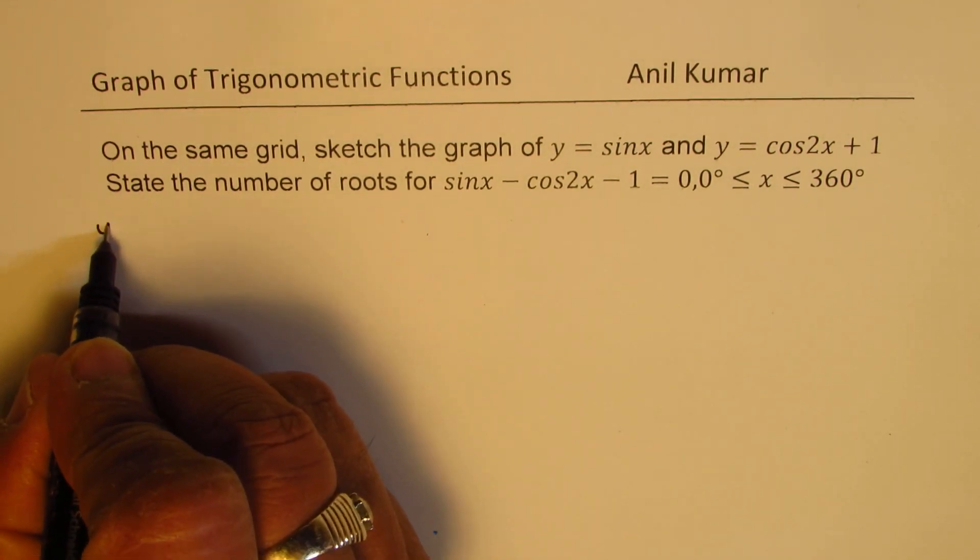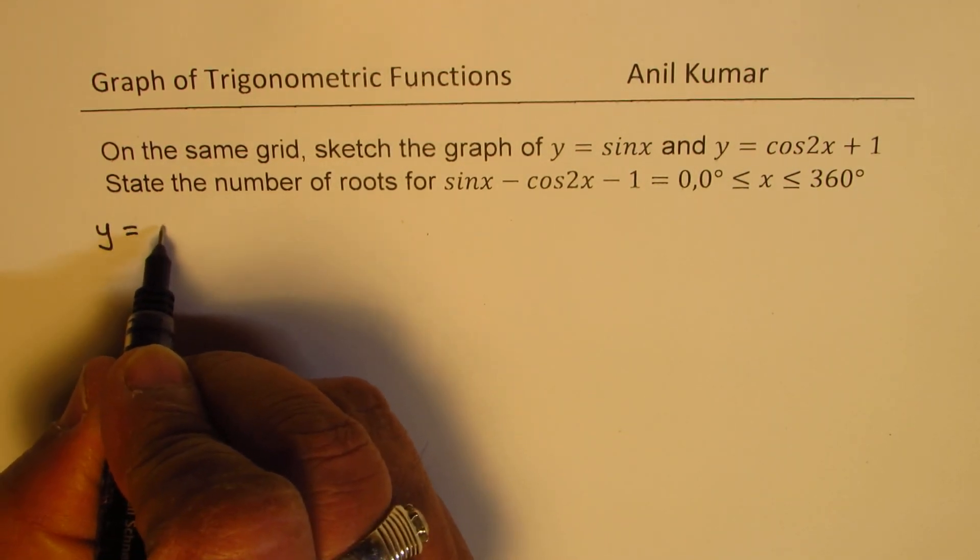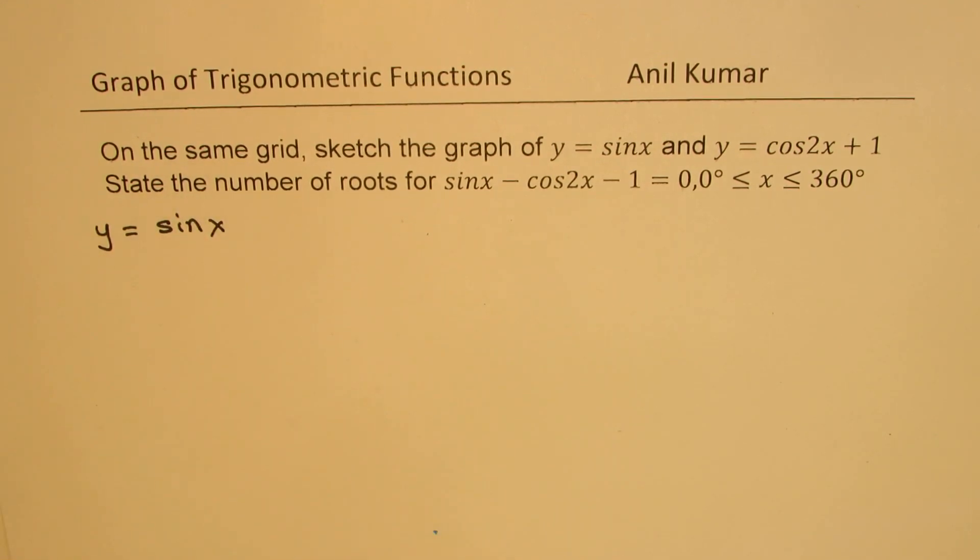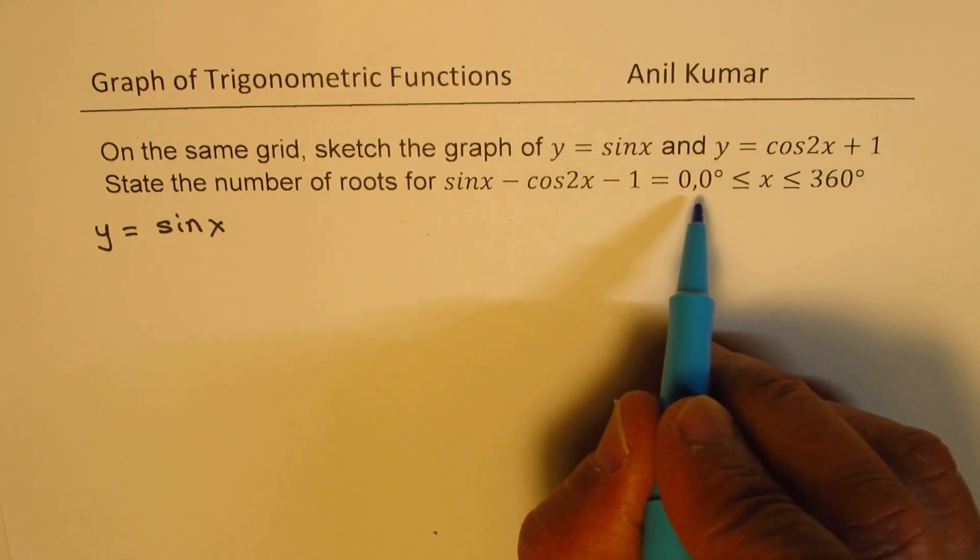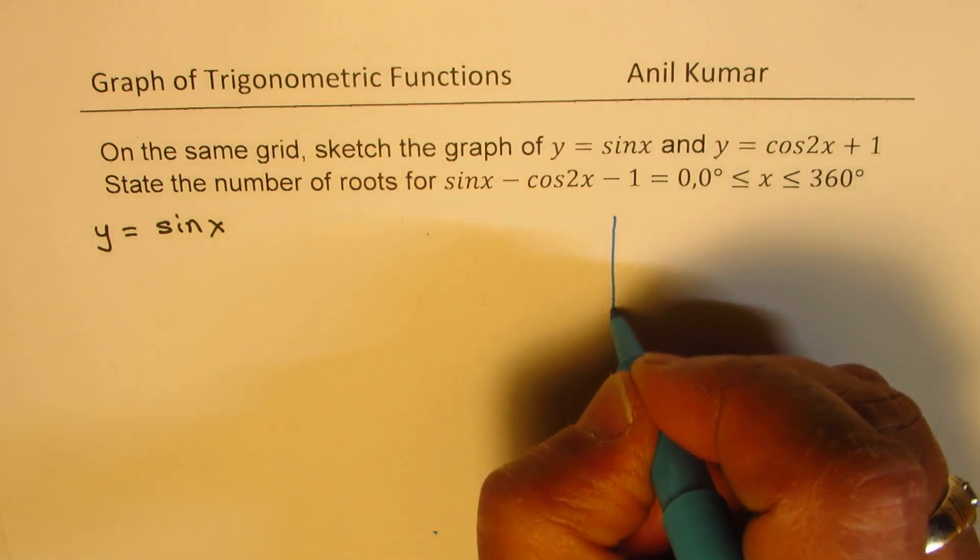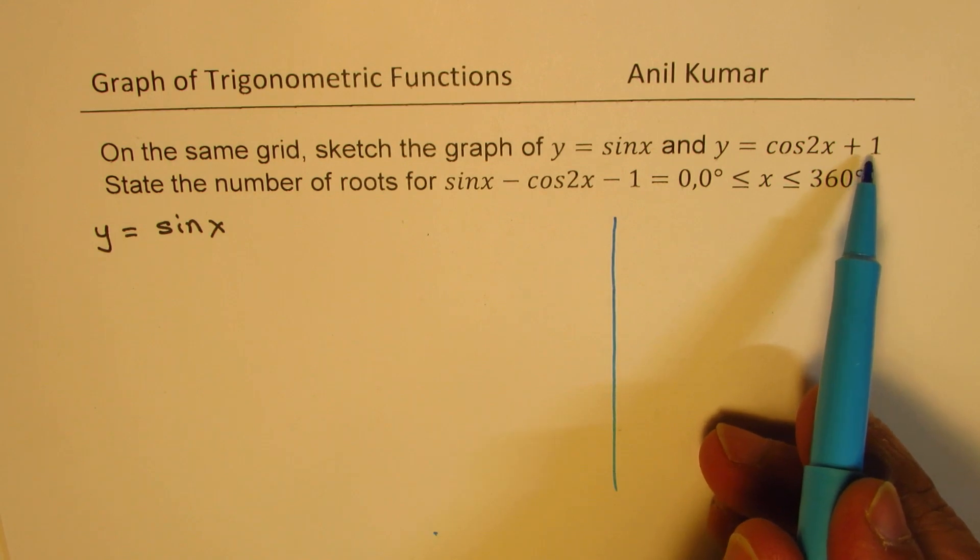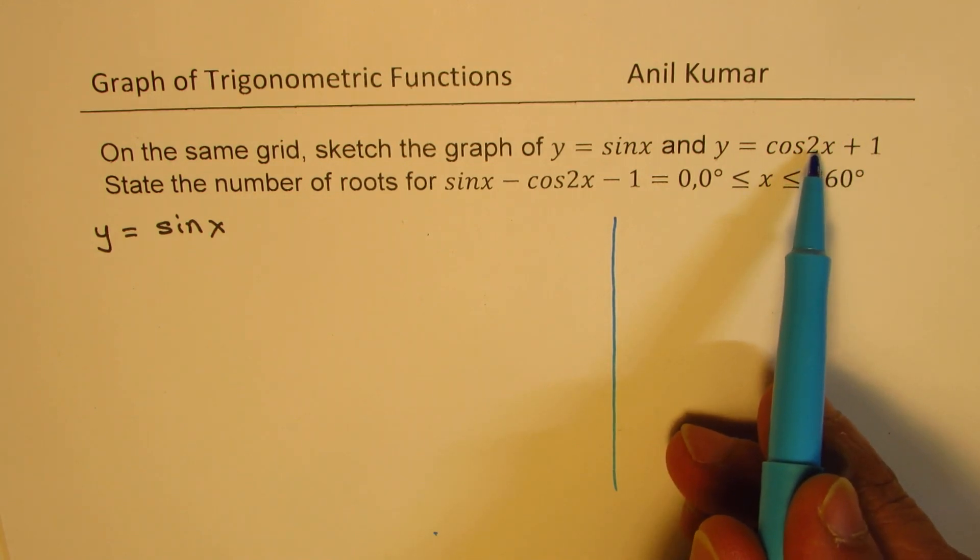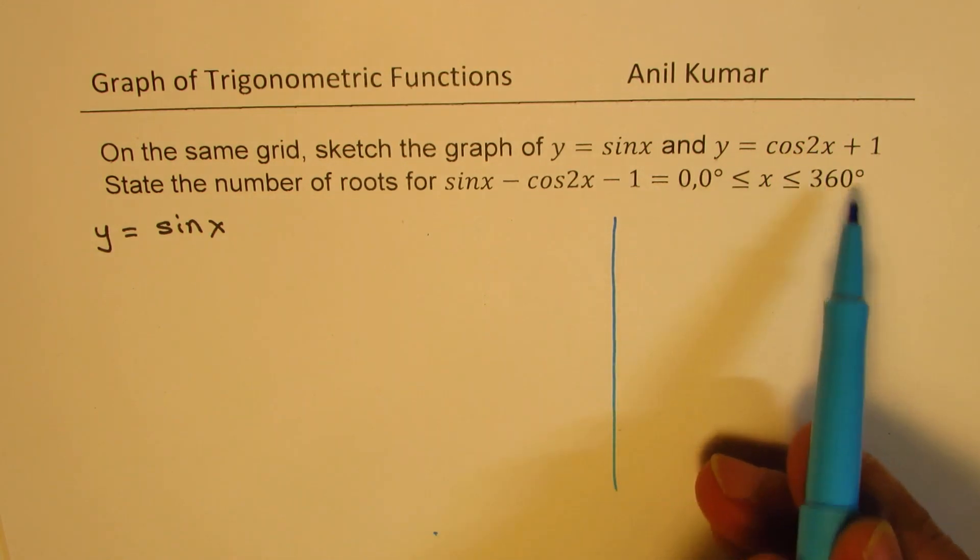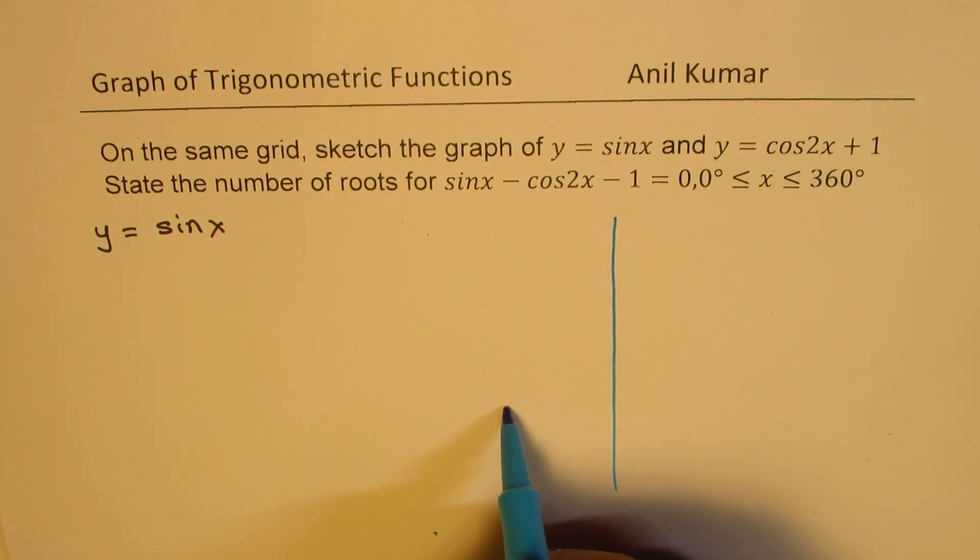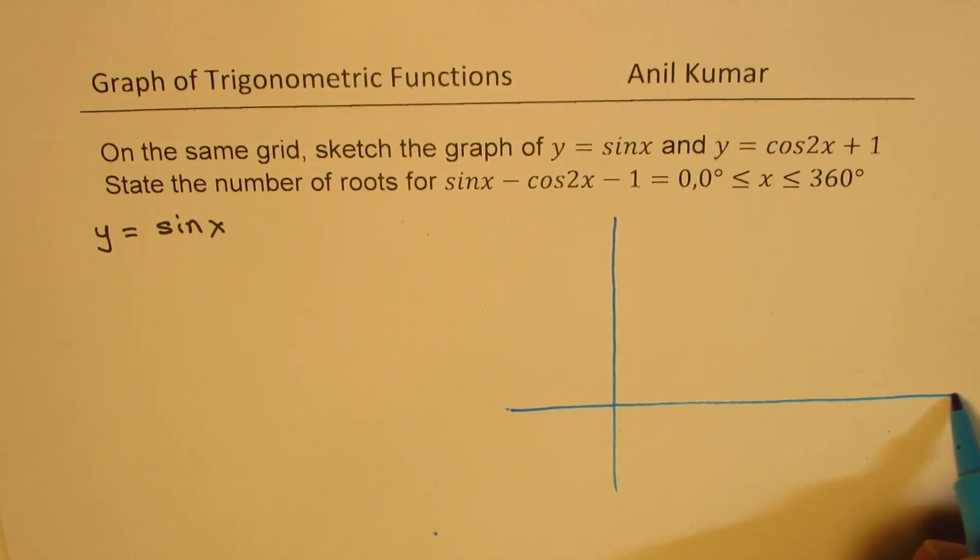So let's begin by graphing the function y equals sin x. That is a basic function within the domain 0 to 360 degrees. The other one is y equals cos 2x plus 1. That means translate it up and we'll have two cosine waves within 0 to 360. Since we are moving upwards, I'll take the horizontal x-axis slightly lower.